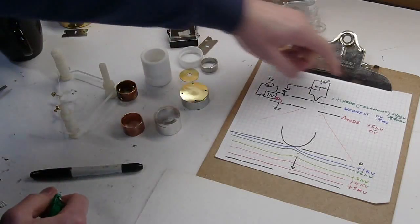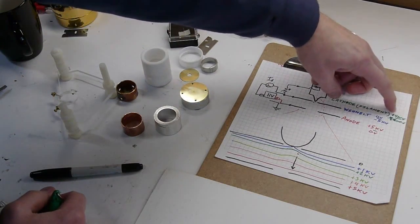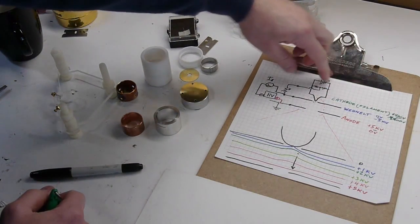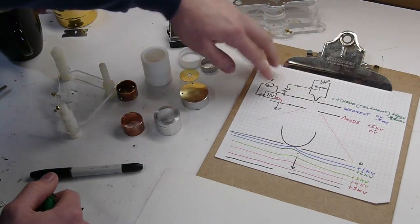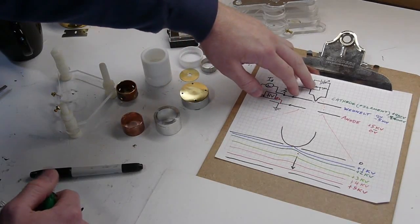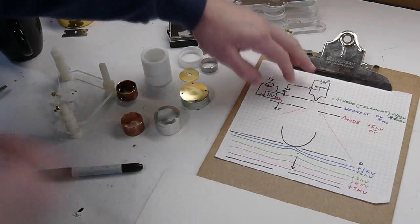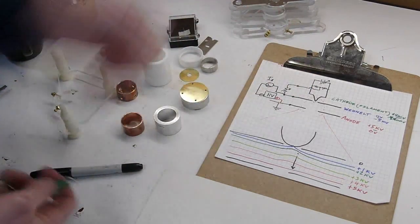Okay, sorry about that guys. I corrected an error here. This is actually supposed to be positive. The filament ends up becoming more positive in potential relative to the rest of the system. And the reason for that is, as it's boiling off electrons, think of getting rid of a negative charge. It's actually going to end up more positive.